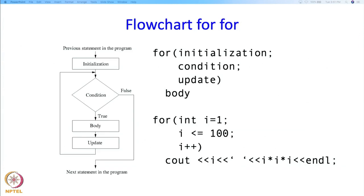So shown here is the flowchart for the for statement along with an example. The initialization is executed first, then the condition is checked. If the condition is false, the statement goes to the next statement in the program. If the condition is true then the body is executed, and after the body the update is executed. After that, again the condition testing happens and so on.